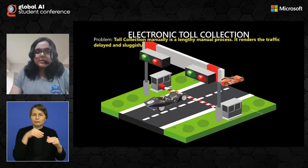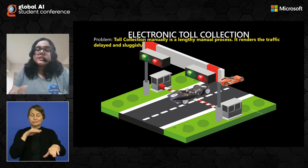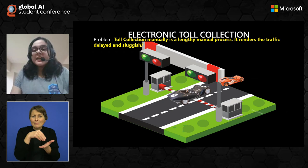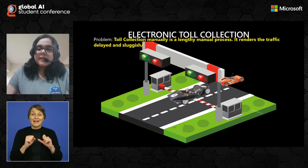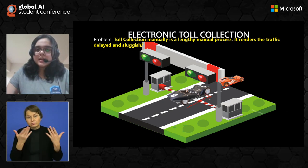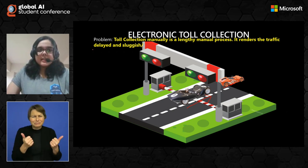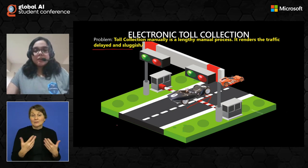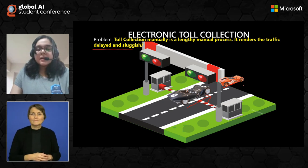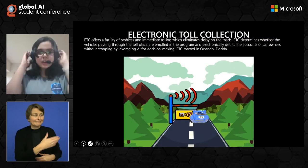Next, Electronic Toll Collection. Electronic toll collection is not associated just with public transportation, but it does give public transport a one-up over private transportation. The main problem with toll collection is that it's a very lengthy manual process — only when the car before a second one moves can the second one shift and take its place. This renders traffic delayed and sluggish, creating a large line of vehicles. Bus and truck lines become particularly huge and very lengthy. The solution is electronic toll collection, which offers cashless and immediate tolling that eliminates delays on roads.